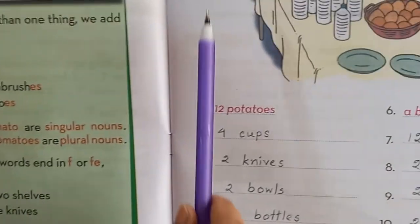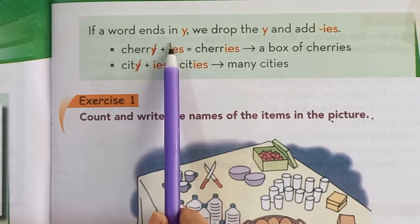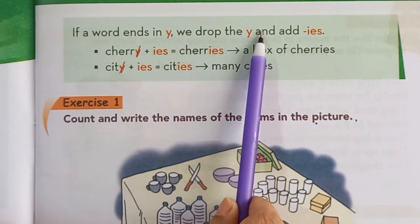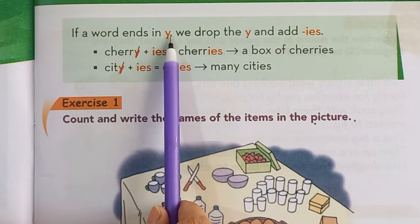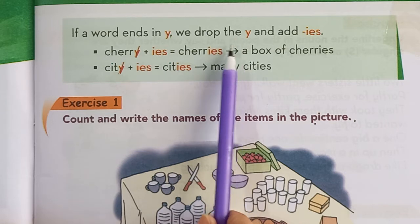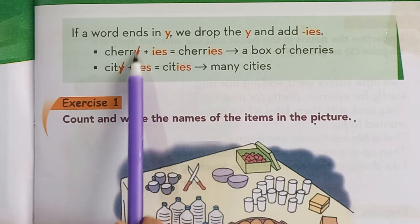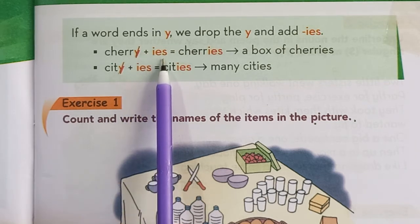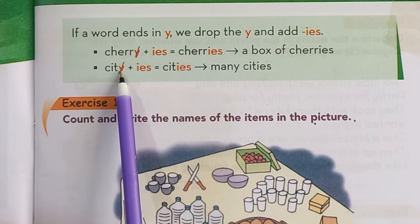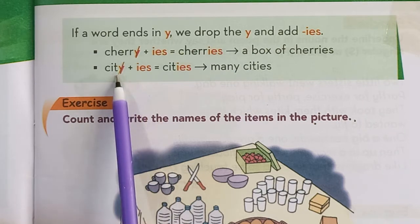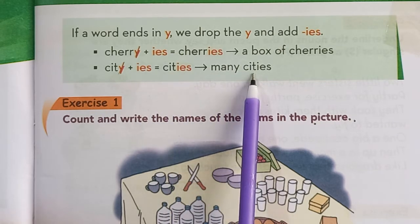Then the next page. There is another rule for another kind of words. If a word ends in Y, we drop the Y and add IES. So if any word ends in Y, we remove the Y and add IES. For instance, cherry ends in Y — we remove the Y and add IES to make it plural: cherries. A box of cherries. Then city — city ends in Y, so we remove the Y and add IES: cities. Many cities.